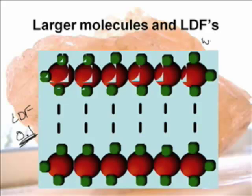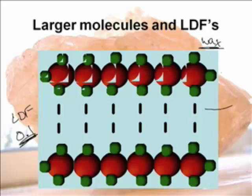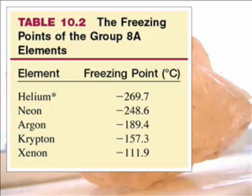For example, wax — candle wax — is a solid at room temperature, and it's nonpolar. If you dropped it in water, it would not dissolve. But wax is just a very, very large molecule. That molecule sticks together, and that's why it's a solid. So you can actually have solids that are held together by London forces, but it has to do with the fact that you have large, large molecules.